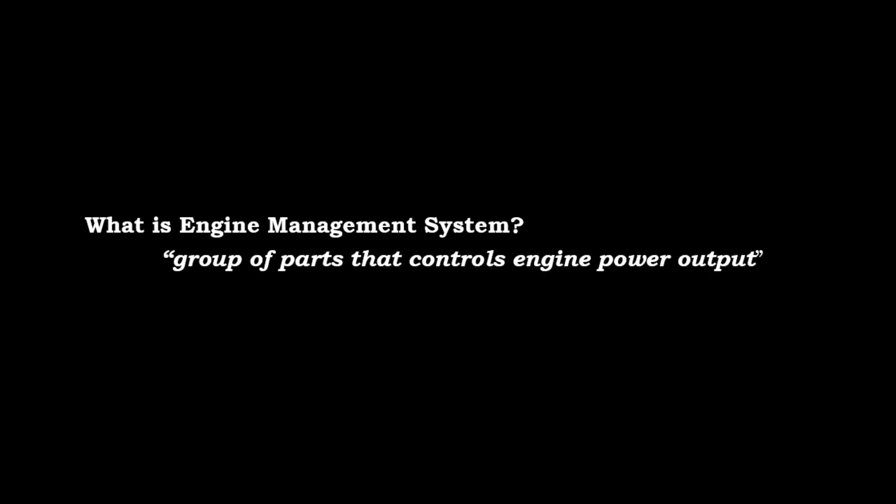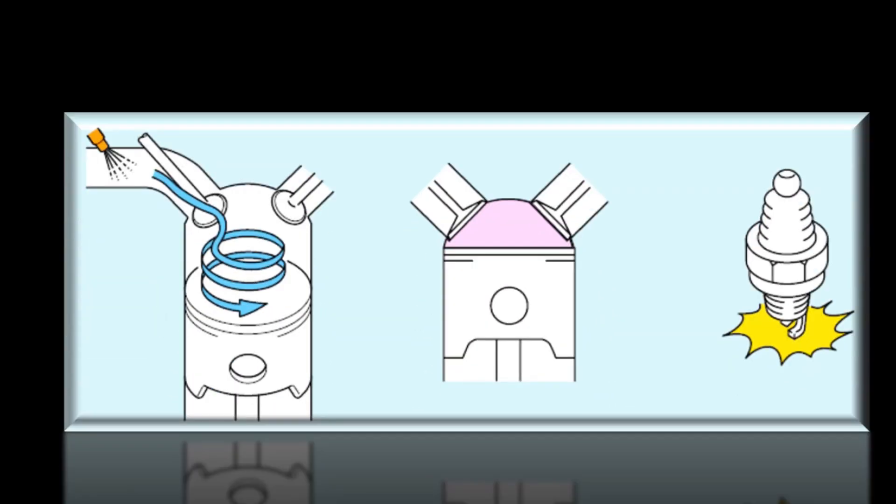So what is an engine management system? The engine management system can be defined as the group of parts that controls engine power output. There are three basic elements for the engine to produce power. First is correct air-fuel ratio depending on engine condition. At idle, an engine will require an air-fuel ratio of 14.7 to 1, meaning 14.7 kilograms of air are needed to burn one kilogram of fuel completely.